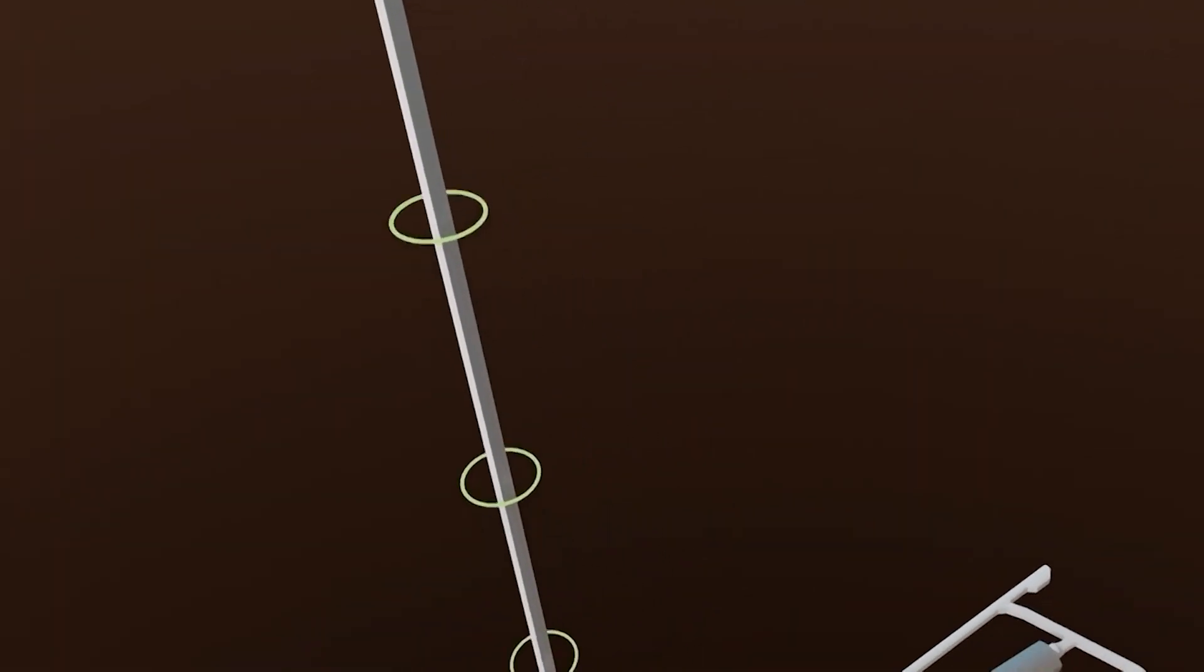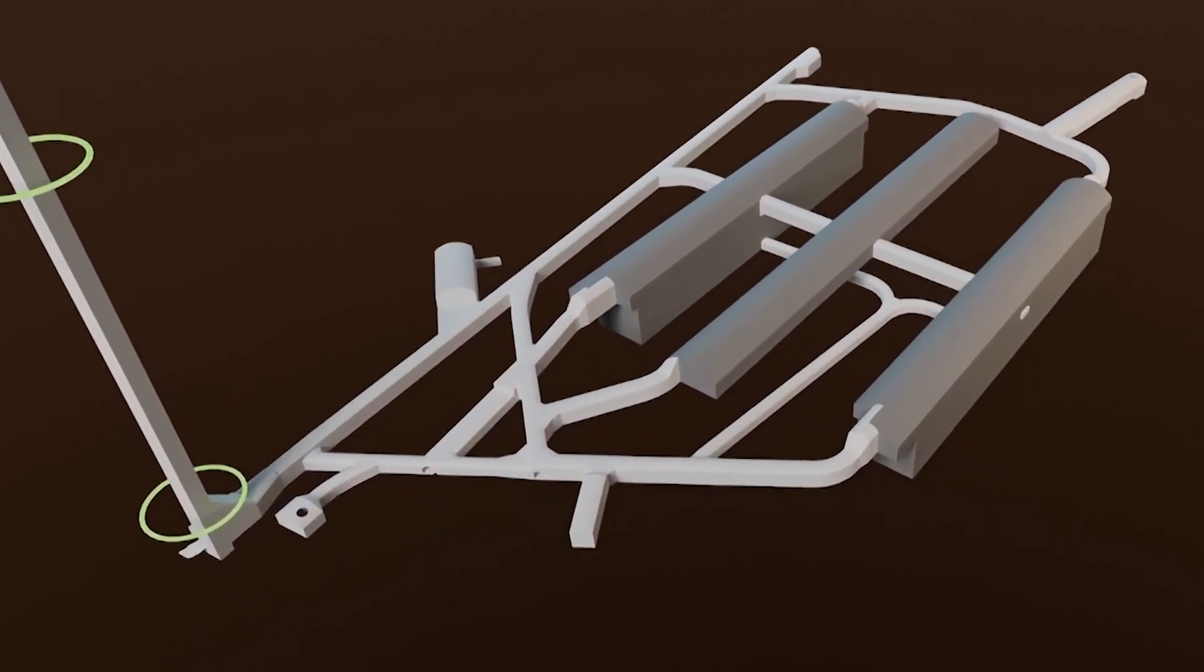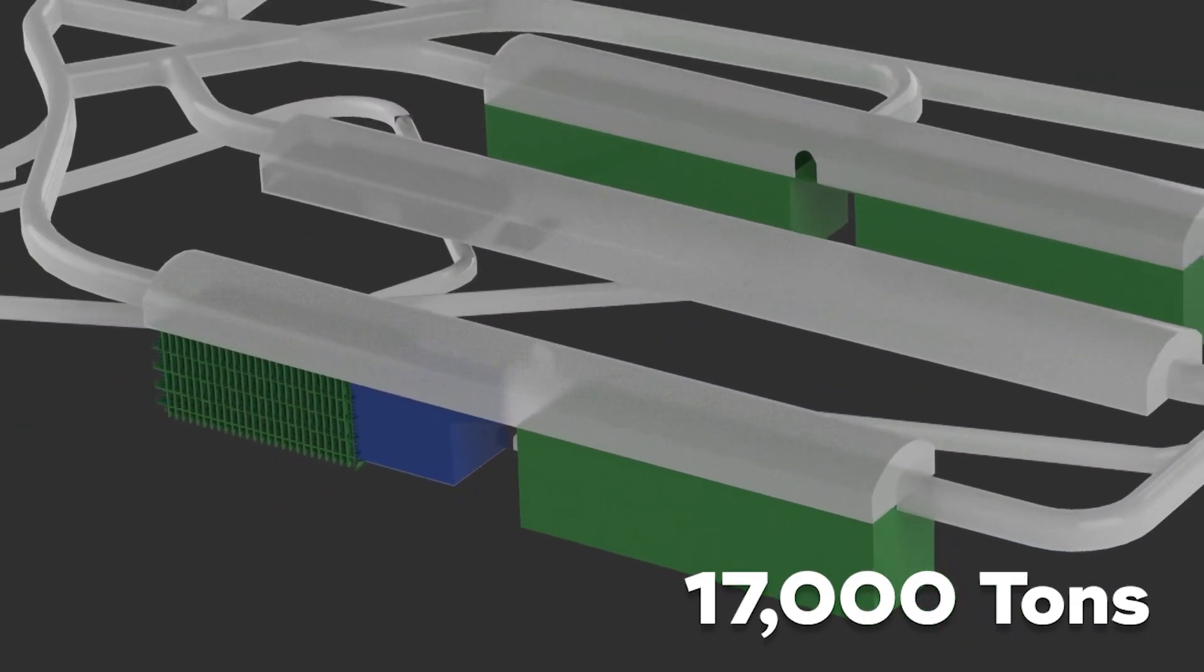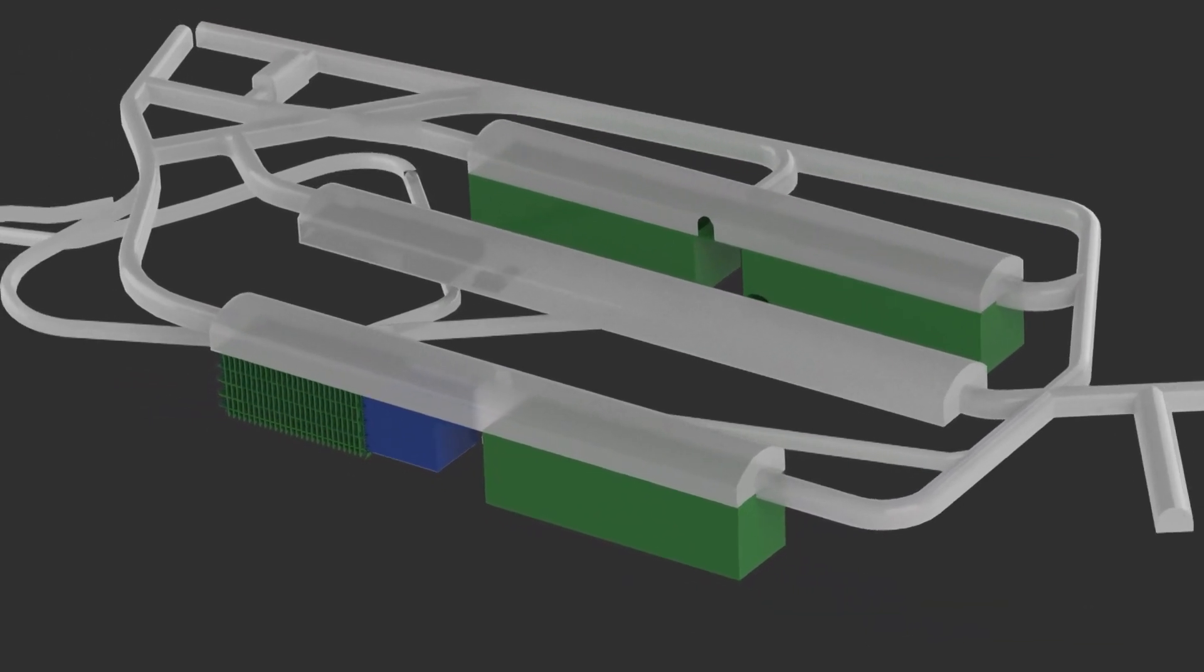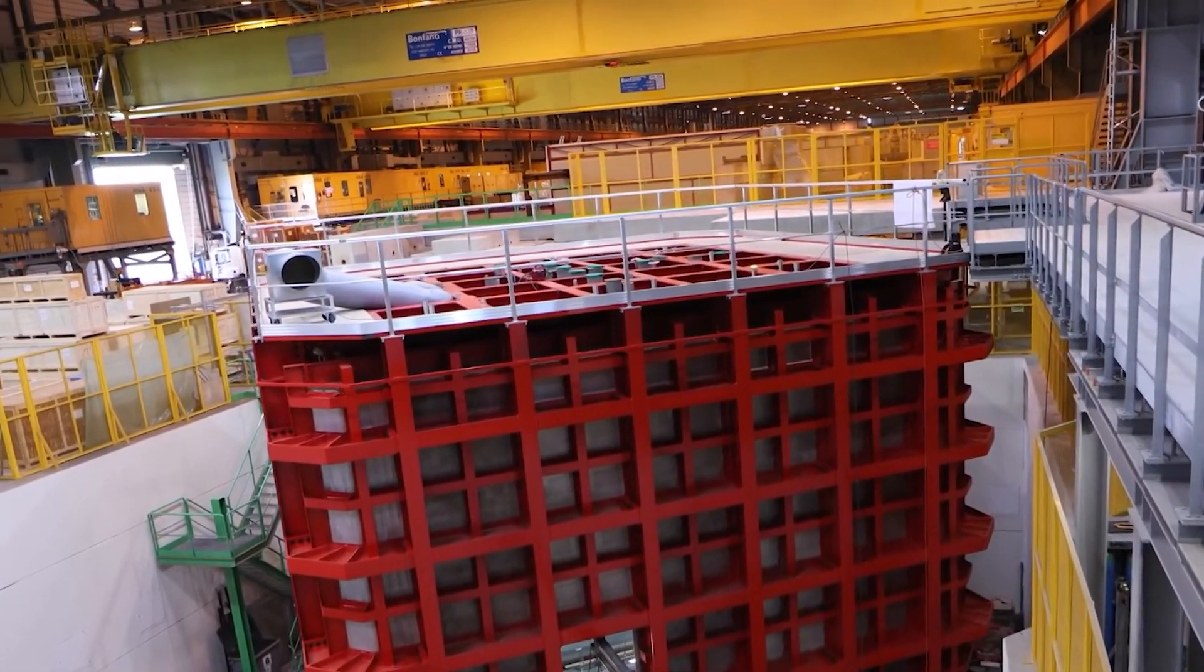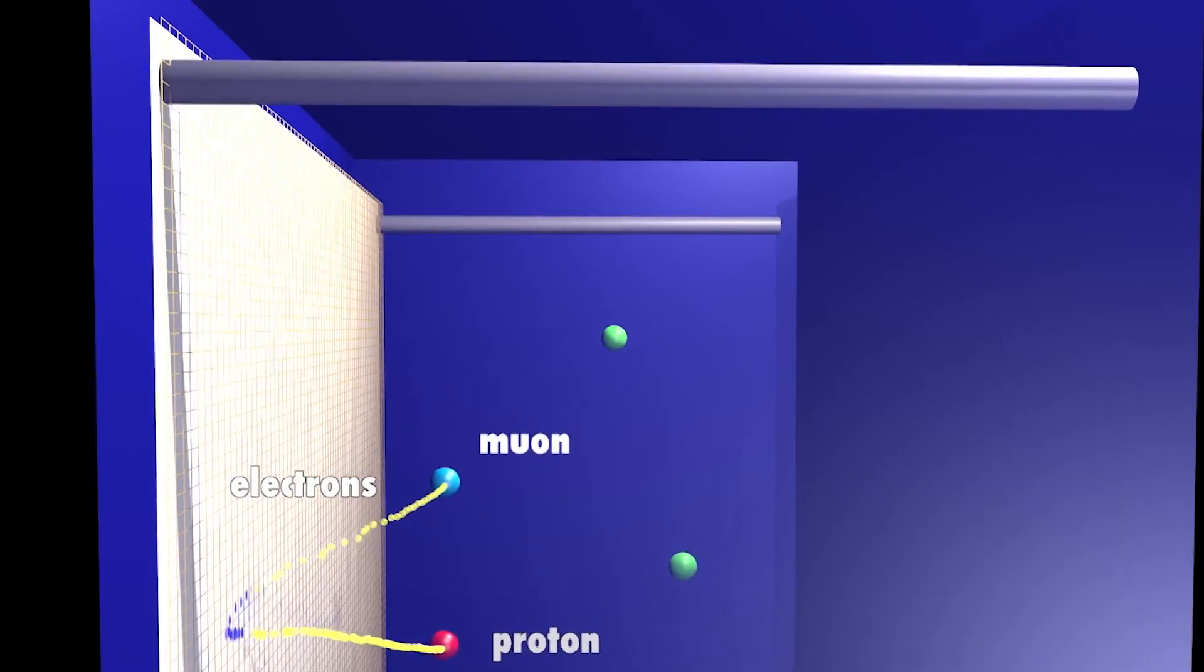Picture this: four cryogenic modules, each as tall as a seven-story building, collectively holding a jaw-dropping 17,000 tons of liquid argon. But why liquid argon? This medium is perfect for spotting neutrino interactions. Here's how it works.